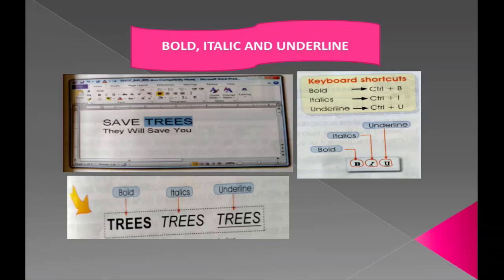Select the word or text, then go to the Home page because that is where the formatting options are. On the Home tab, you will see a box with B, I, U — Bold, Italic, and Underline. Click the corresponding button to apply the formatting you want.